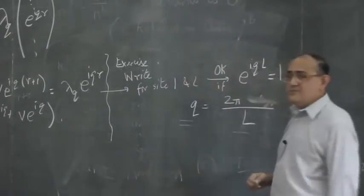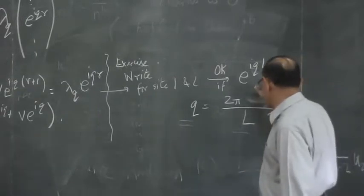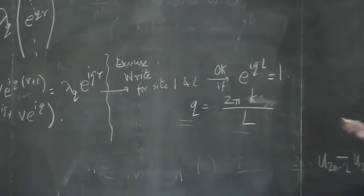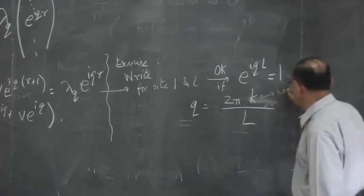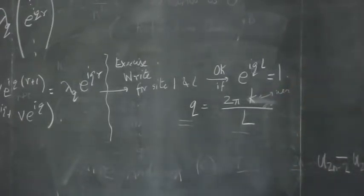So, q is 2π times integer over L. If you want, we will give the integer a name. We won't call it n because n appears in the problem. We will call it k. Unfortunately, k is less standard. We have to make k an integer: 0, 1, 2 up to L - 1.